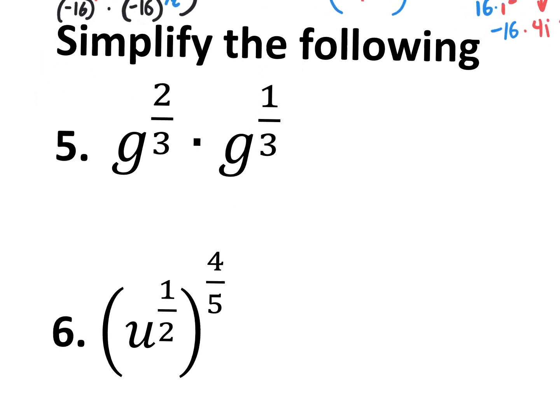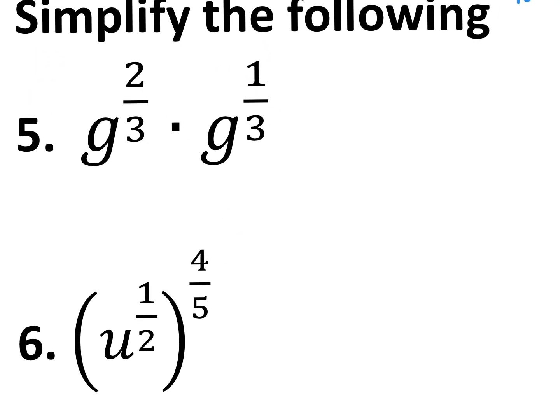If you're doing a math problem one way and your partner is doing it totally differently, that doesn't mean either of you is wrong — you may just be taking different roads to the same answer. Number five is ridiculously easy: rule one of exponents says whenever you're multiplying with the same base, you add the exponents. Two-thirds plus one-third equals three-thirds, which is one, so the answer is just g.